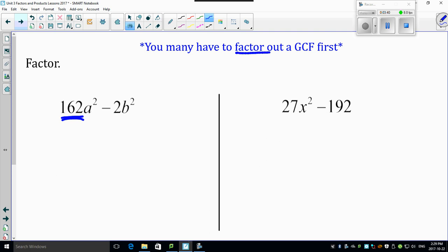You may have to factor out a GCF first. Look how many times GCF has come up in this unit. It's incredibly powerful. Don't forget about it. So if you take a 2 out of these two, look what happens. Take the 2 out. This 162 becomes 81a squared. This becomes minus b squared.